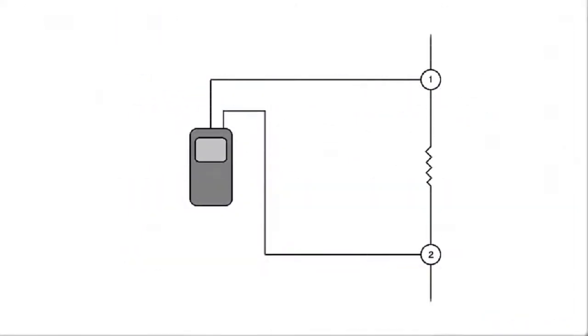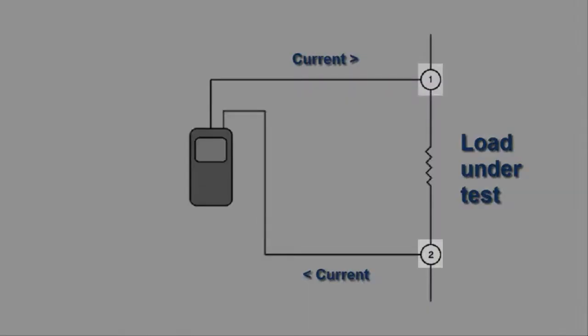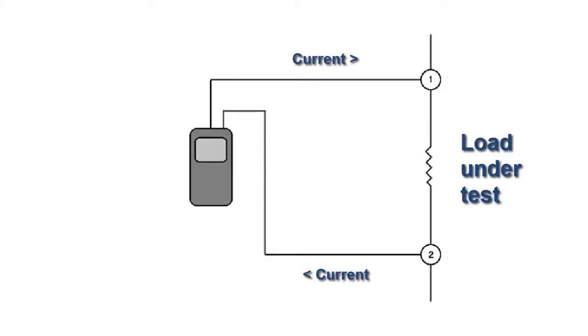In the diagram shown on the screen, the probes numbered 1 and 2 provide constant current to the load under test and also measure the voltage across the load in order to determine the resistance.